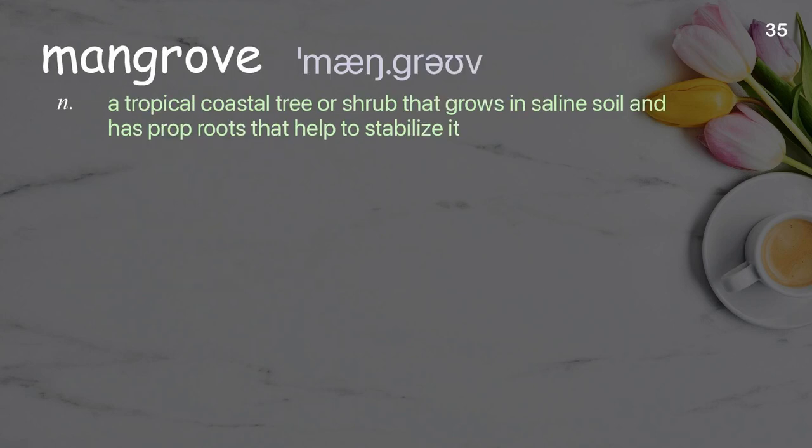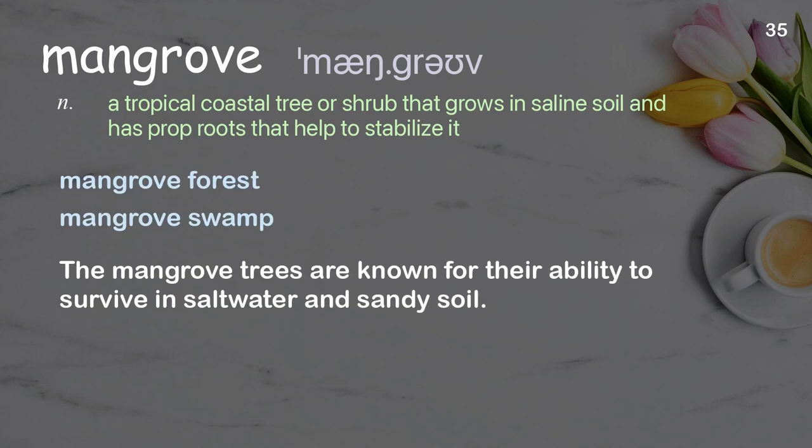Mangrove. A tropical coastal tree or shrub that grows in saline soil and has prop roots that help to stabilize it. Examples: mangrove forest, mangrove swamp. The mangrove trees are known for their ability to survive in salt water and sandy soil.